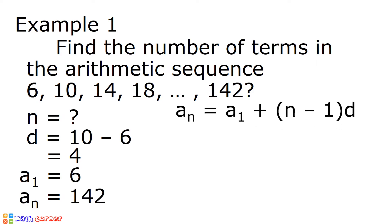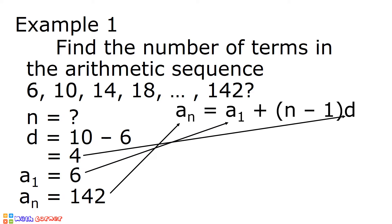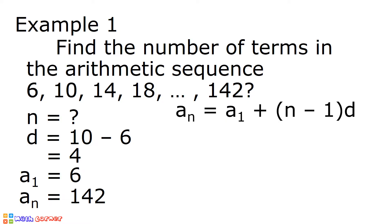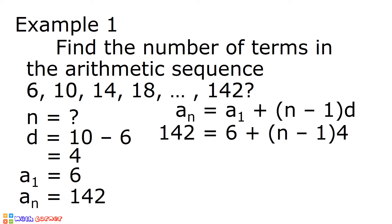By using this formula, let us substitute all the given values. 142 goes to a sub n, 6 to a sub 1, and 4 to the common difference. After substitution, we have 142 is equal to 6 plus quantity n minus 1 times 4.